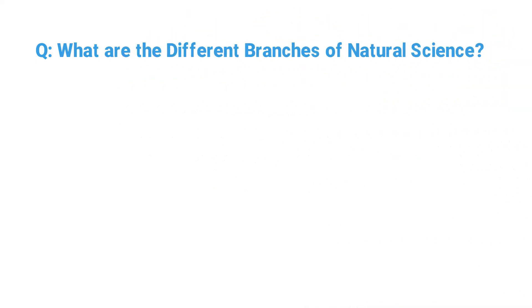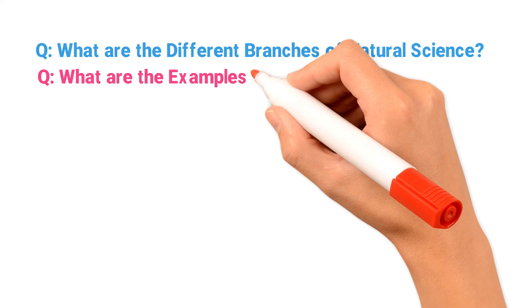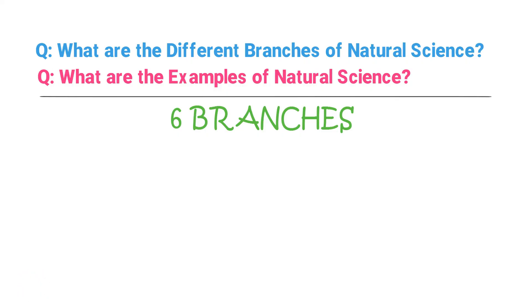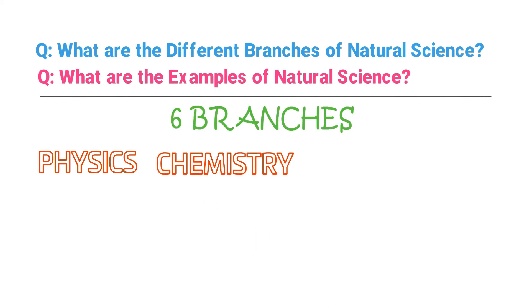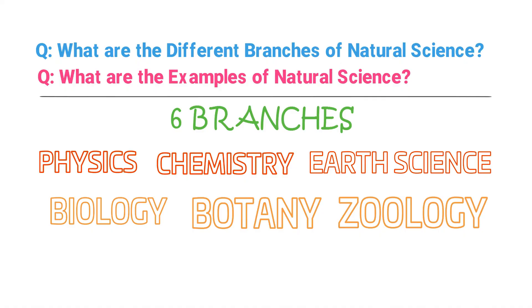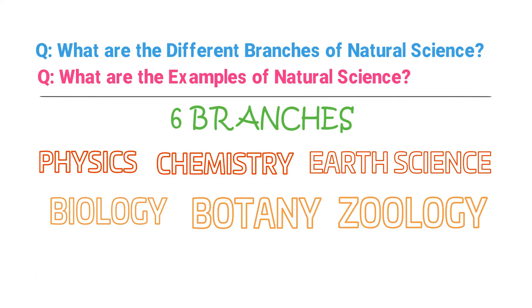Now let me answer two bonus questions that are often asked. The first question is: what are the different branches of natural science? The second question is: what are the examples of natural science? The answer to both questions is the same — always remember the six branches: physics, chemistry, earth science, biology, botany, and zoology. These are the main branches and also the examples of natural science.